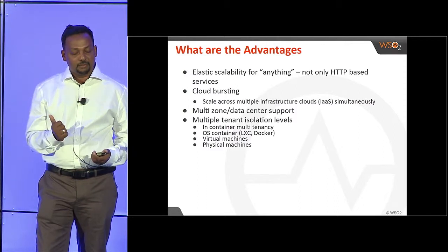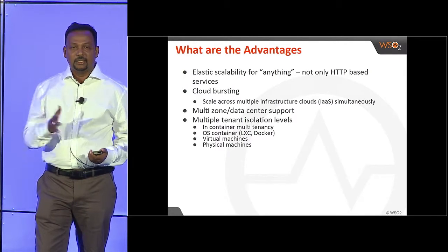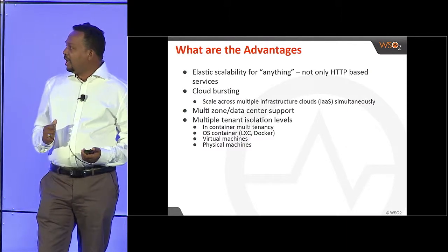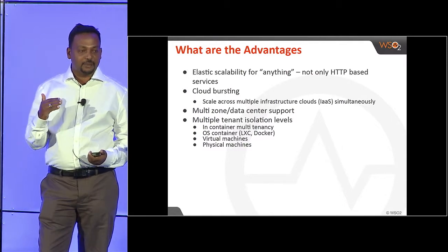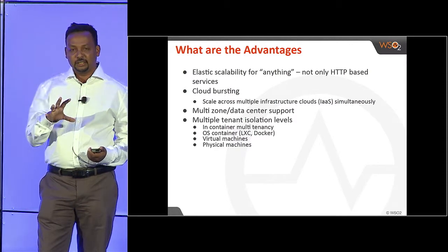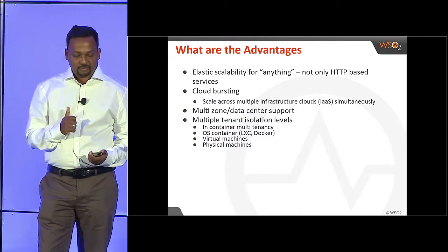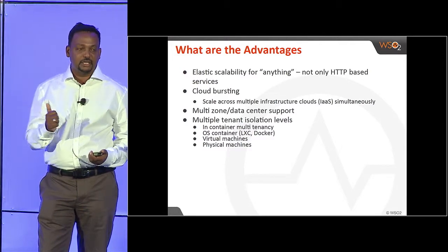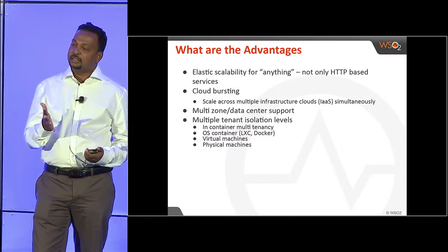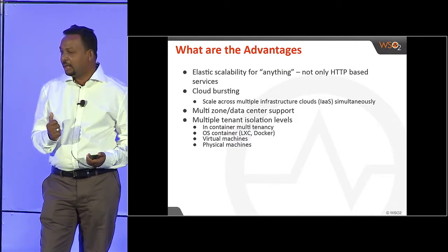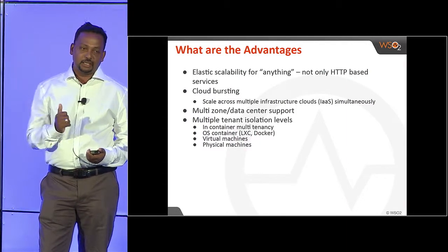Stratos also has multi-zone, multi-data center support, so you can deal with large volumes of load in the system. Another interesting aspect of the Stratos architecture is its ability to deal with tenant isolation at multiple levels. The most interesting aspect is it supports in-container multi-tenancy, which means that given an instance of a service node, you can have multiple tenants isolated in the same instance. It can also have operating system layer, virtual machine layer, or physical machine layer tenancy isolation. The in-container tenant isolation is the most appealing because it gives you the highest multi-tenancy density.